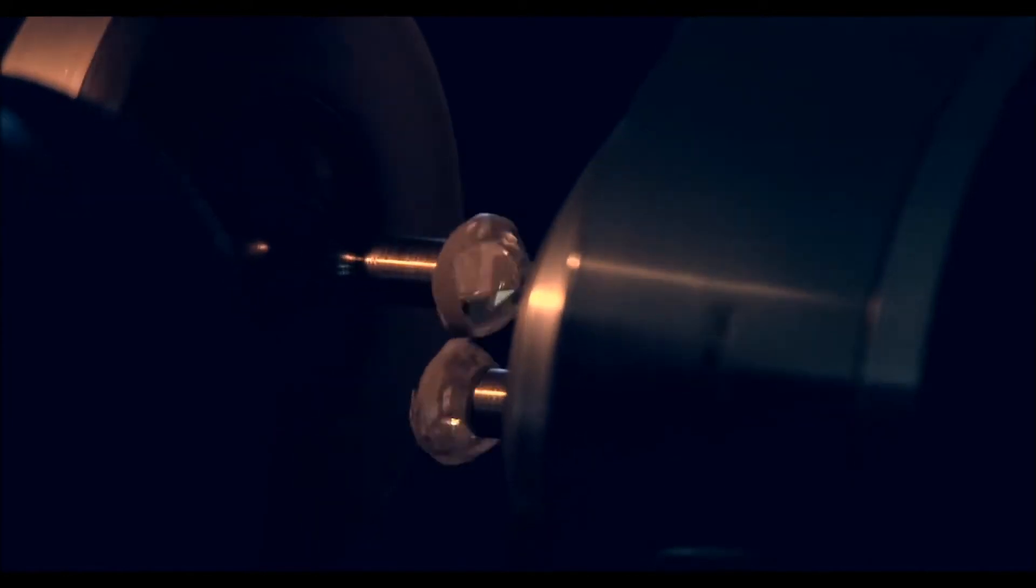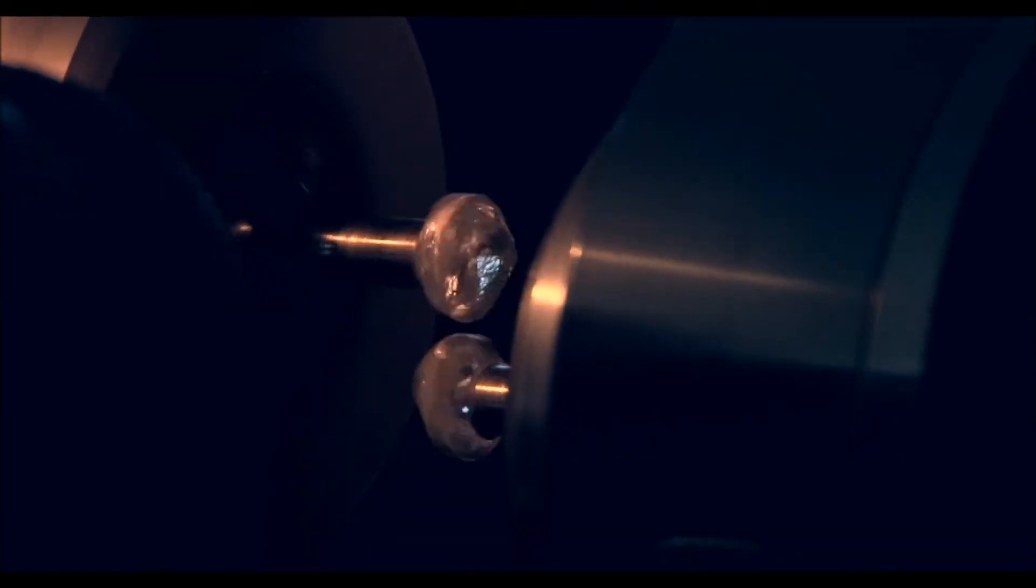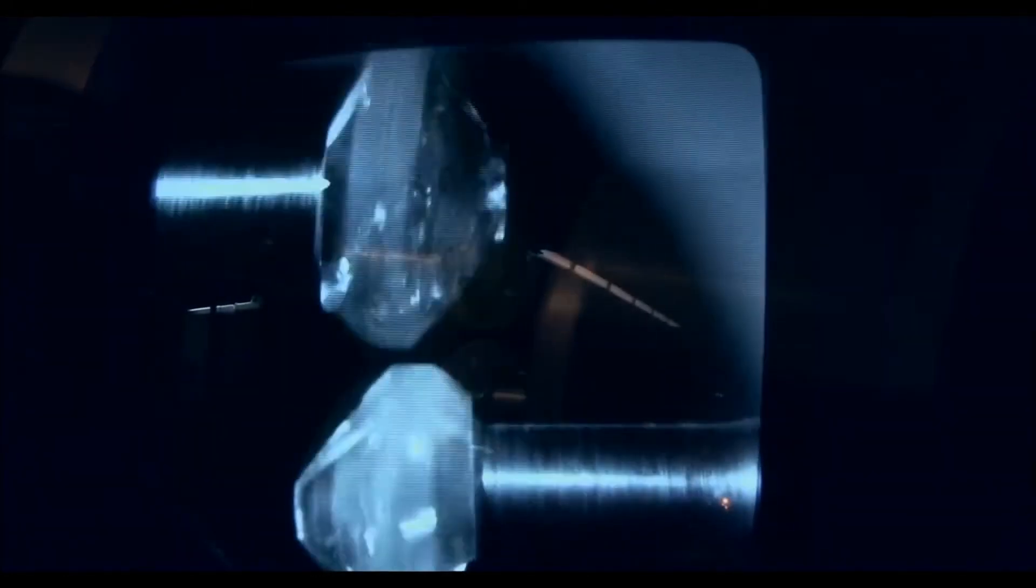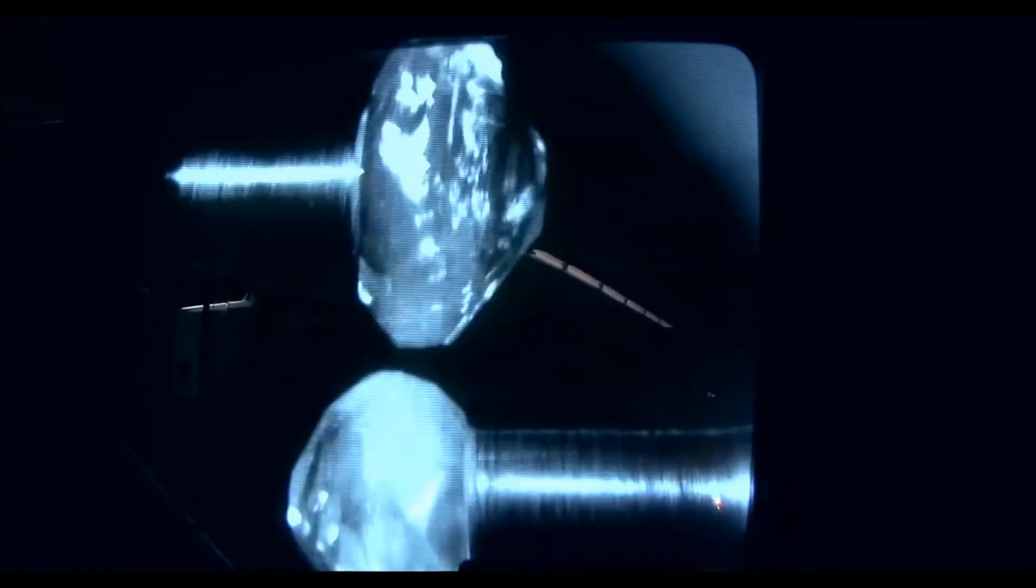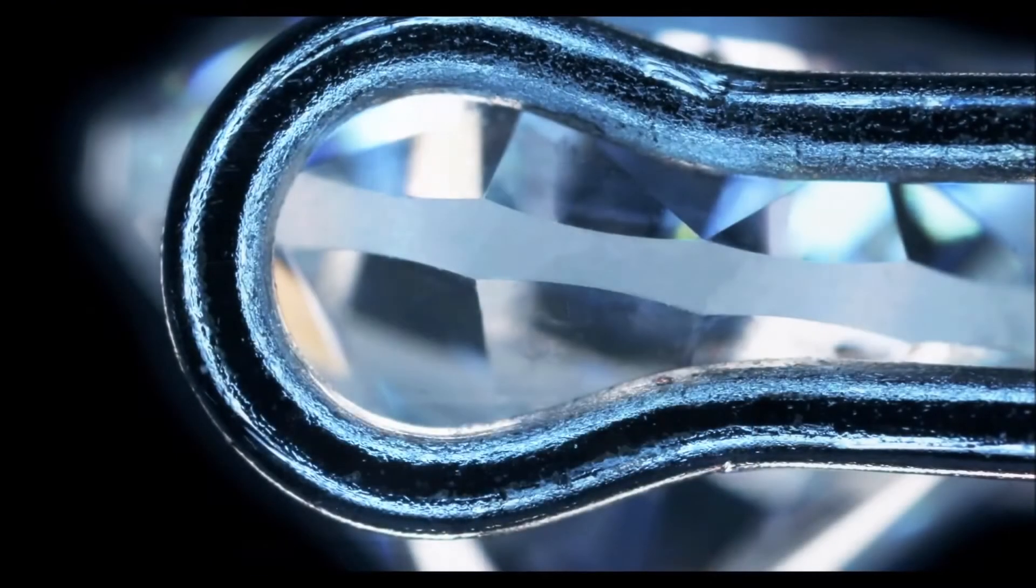The next stage in the process is to make the diamond round. This is done using a brooting machine. Two diamonds are turned against each other to make the diamond round in shape.